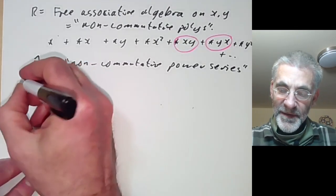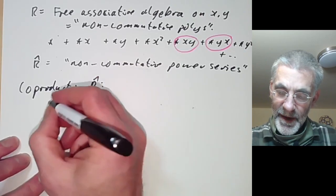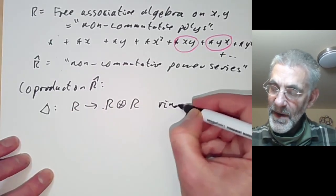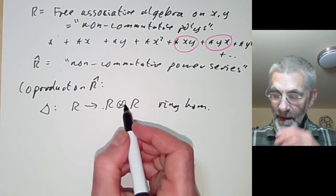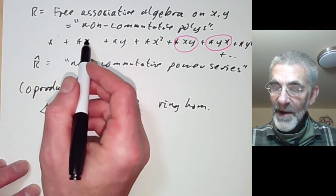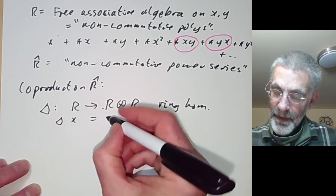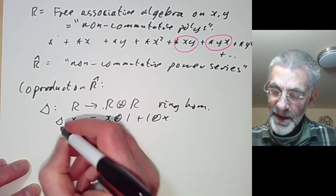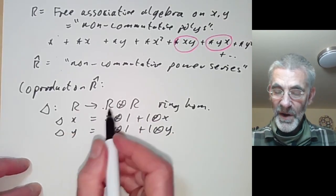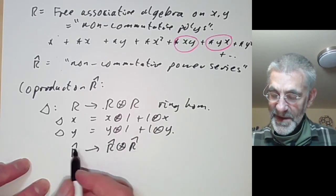Now I'll define a co-product on R-hat. It will be a ring homomorphism from R to R⊗R. Since R is freely generated by x and y, we can define any ring homomorphism by specifying the images: x maps to x⊗1 + 1⊗x, and y maps to y⊗1 + 1⊗y. This defines a homomorphism from R to R⊗R, and it induces a homomorphism to the completion in the same way.